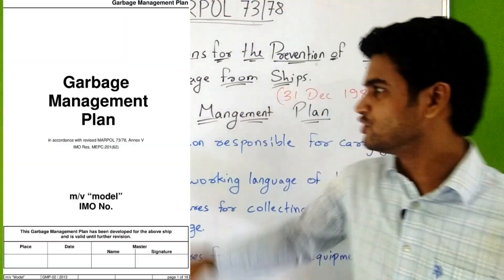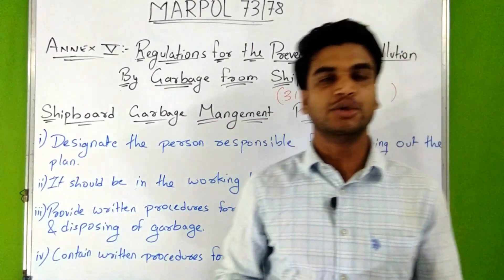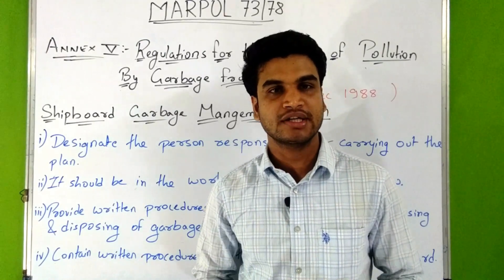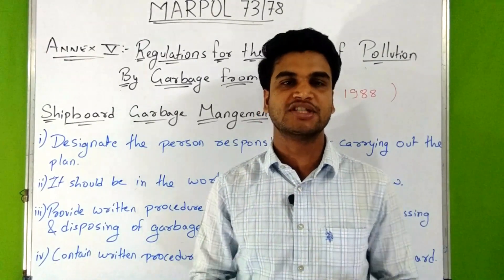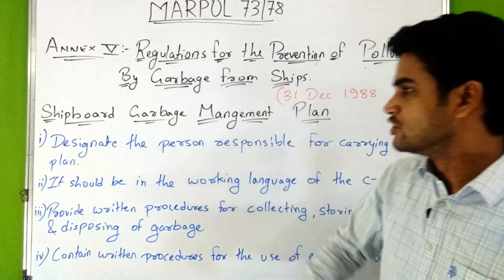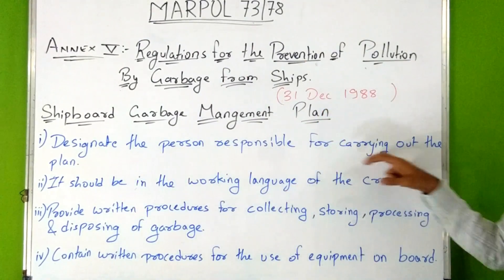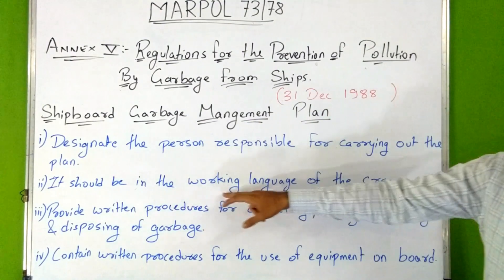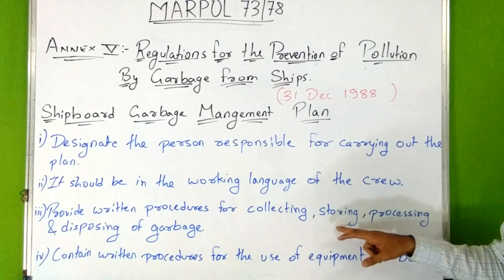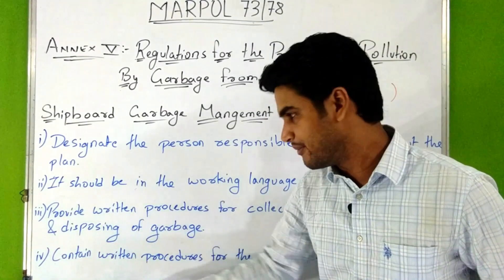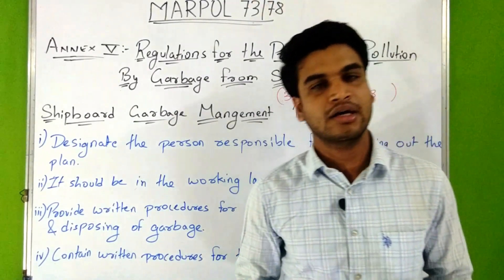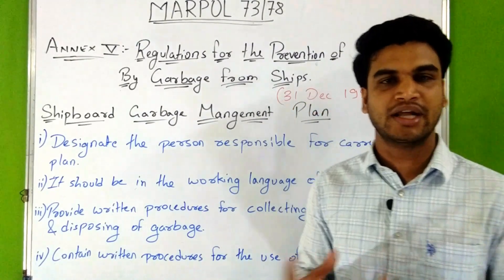Now let's discuss the shipboard garbage management plan. All ships of 400 gross tonnage and above and all ships certified to carry 15 or more persons must carry a shipboard garbage management plan. This plan must designate the person responsible for carrying it out, be written in the working language of the crew, provide written procedures for collecting, storing, processing, and disposing of garbage, and contain written procedures for the use of equipment on board.